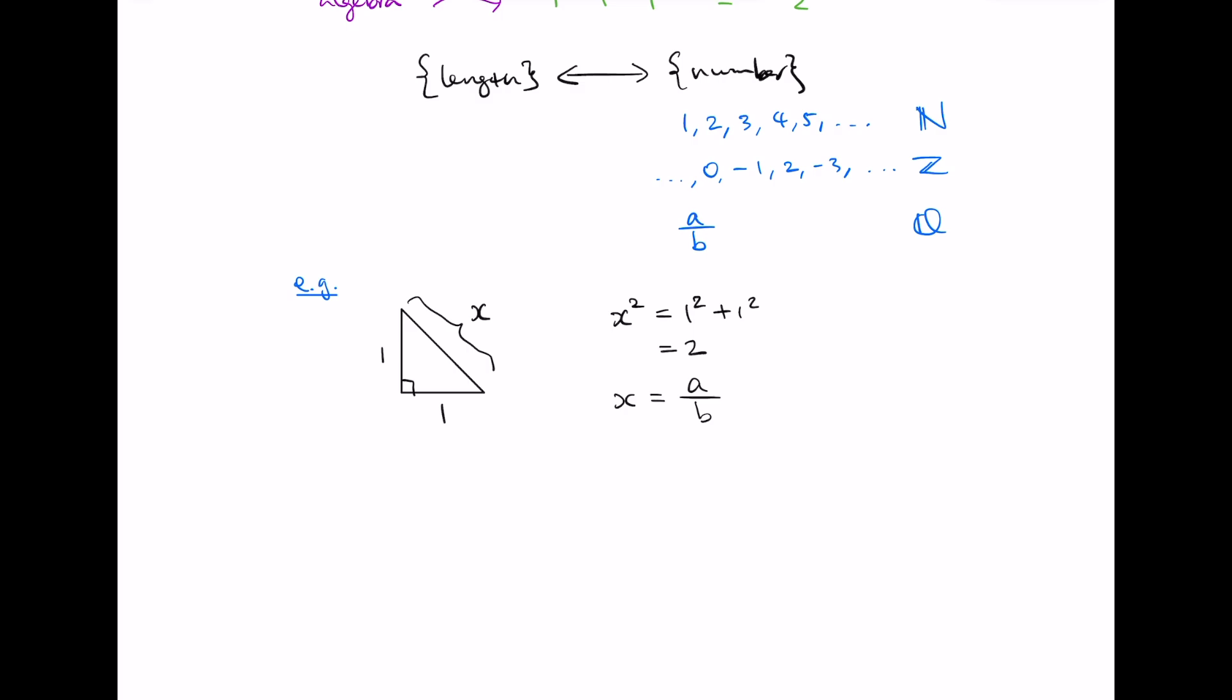So indeed, suppose that x is equal to a divided by b for natural numbers a and b. And we can also assume that a and b don't have any factors in common. Otherwise, we would cancel them out. Now, this would mean that x squared, which is a squared divided by b squared, is equal to 2.